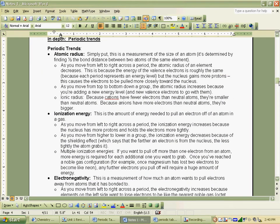So periodic trends, atomic radius. This is the measurement of the size of an atom. That'll be important for something here. And as you move, here's some trends. As you move from left to right across the period, the atomic radius of an element decreases.